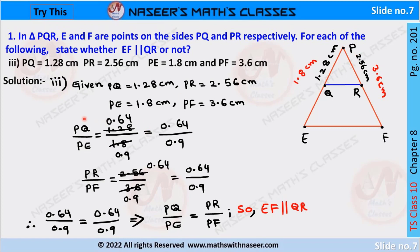We have to check EF external, because PE measurement is more than PQ and PF measurement is more than PR. So first we check the ratios: PQ by PE is equal to 1.28 by 1.8, which gives 0.64 by 0.9. The other ratio PR by PF is equal to 2.56 by 3.6, which after cancellation also gives 0.64 by 0.9. These two ratios are equal, so PQ by PE is equal to PR by PF. Therefore, EF is parallel to QR.